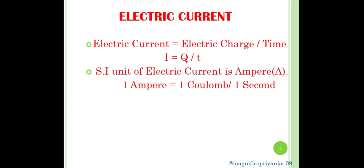Electric current is measured in ampere, denoted by A. Electric current can also be measured in different units such as ampere, milliampere, and microampere.